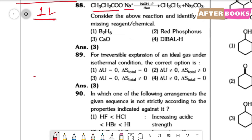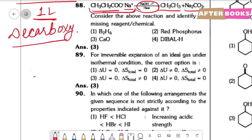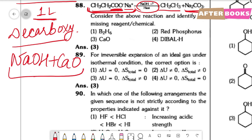Question number 88. Sodium salt of propanoic acid reacts with NaOH (plus something) on heating to give an alkane and Na2CO3. This is a decarboxylation reaction. Decarboxylation occurs in the presence of soda lime (NaOH + CaO). NaOH is used due to its hygroscopicity. The correct option is option 3.